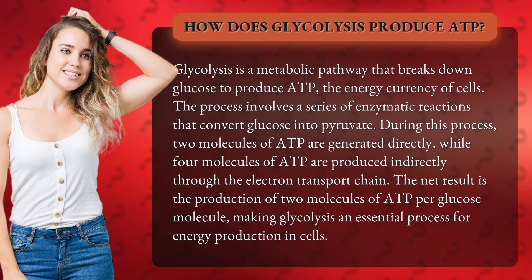The process involves a series of enzymatic reactions that convert glucose into pyruvate. During this process, two molecules of ATP are generated directly, while four molecules of ATP are produced indirectly through the electron transport chain.